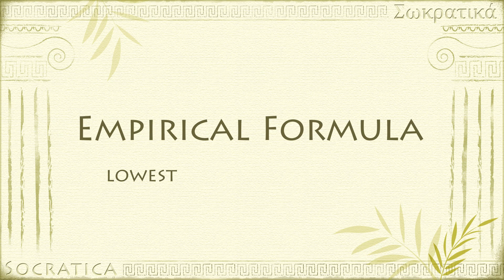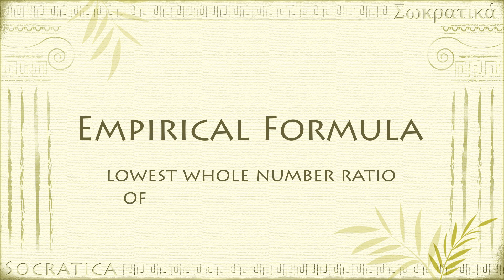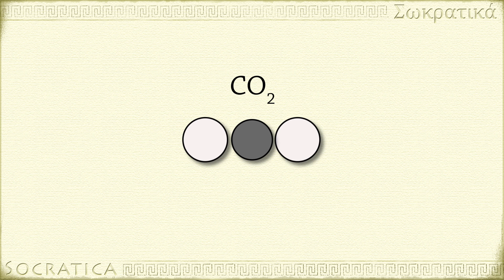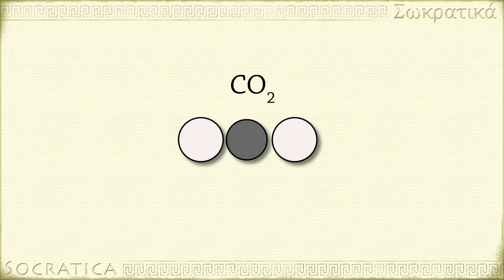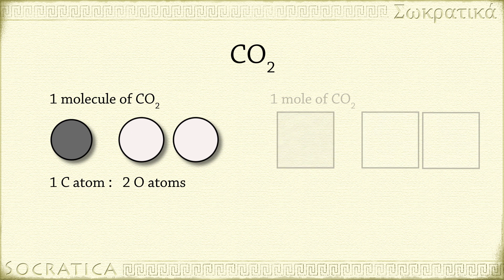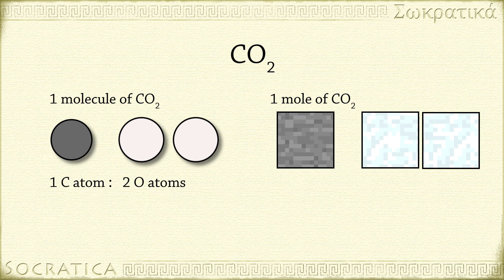The empirical formula gives the lowest whole number ratio of the atoms of the elements in a compound. For example, in one molecule of CO₂, for every atom of carbon there are two atoms of oxygen. This ratio is also true at the macroscopic level.